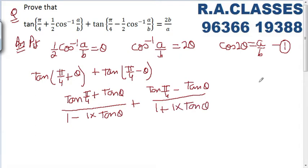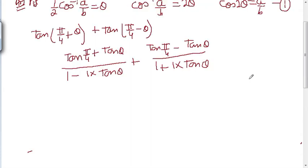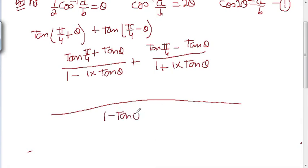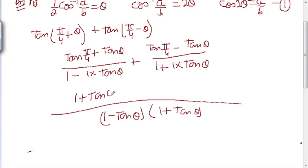अब हम इसका LCM लेंगे। LCM आ जाएगा (1 - tanθ)(1 + tanθ)। (1 + tanθ) multiply होगा तो आजाएगा (1 + tanθ)² — whole square। और (1 - tanθ) multiply होगा तो आजाएगा (1 - tanθ)² — whole square।